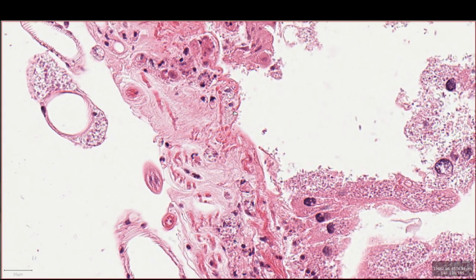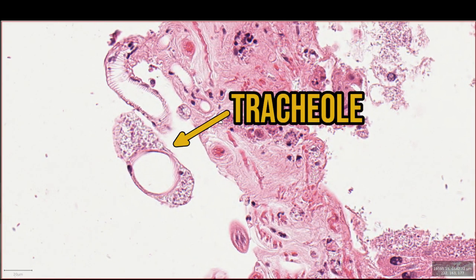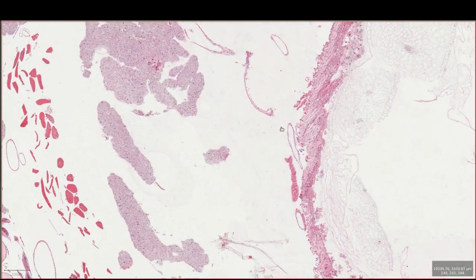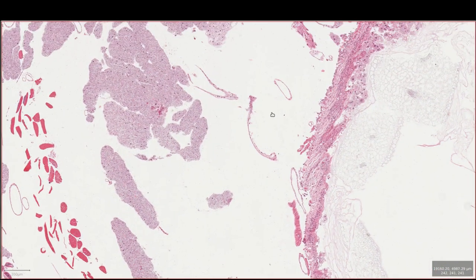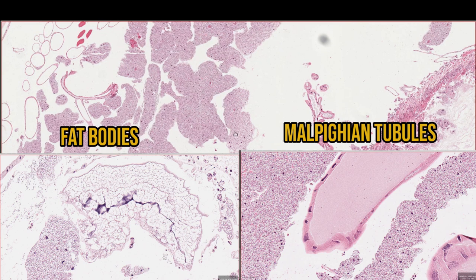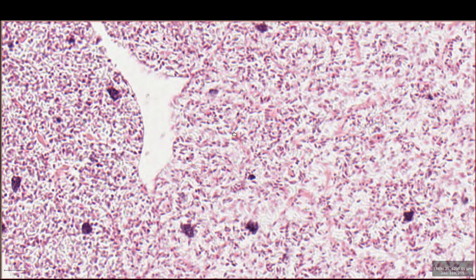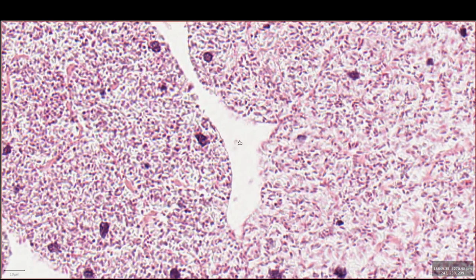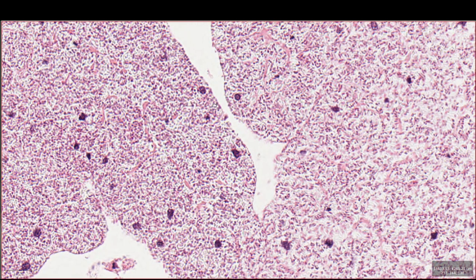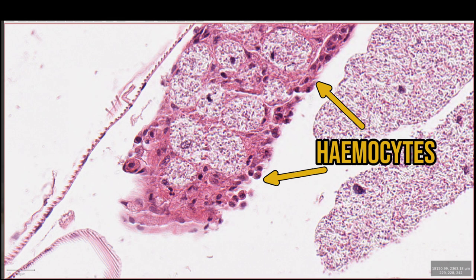Underneath the intestine we start to hit some tracheoles — air-filled tubes that constitute the caterpillar's respiratory system. Some of the tracheal cells are infected as well. Moving into the coelomic cavity, I would expect there to be organs like Malpighian tubules and fat bodies. Instead, all we have are masses of unrecognisable cells that are swollen and filled with microsporidia. This is one hell of an infection. In a couple of areas it looks like the immune system has made an attempt at trying to control the pathogens, but it's been overwhelmed.